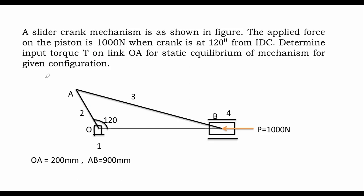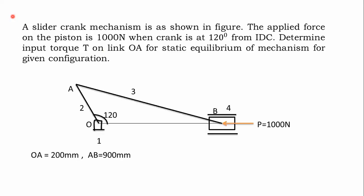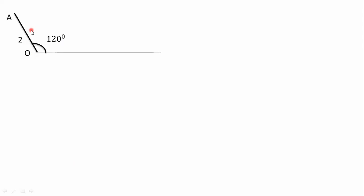We need to construct the diagram. So first we need to construct the horizontal line, then take the 120 degree crank angle. If it is 60 degree, take 60 degree; if it is 45 degree, take 45 degree. Let's construct OA. The OA dimension is 200 mm, so we need to scale it. Scale: 1 centimeter equal to 100 mm, which means we take a 2 centimeter line.